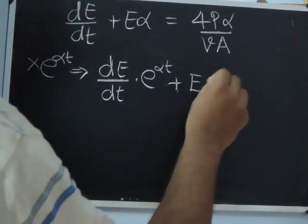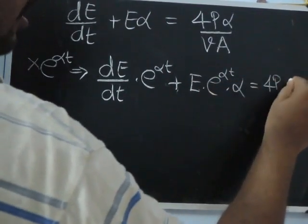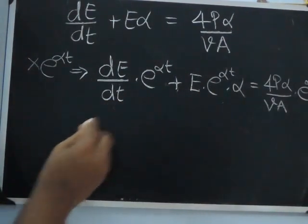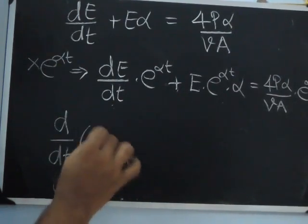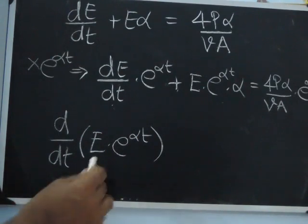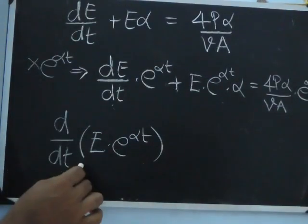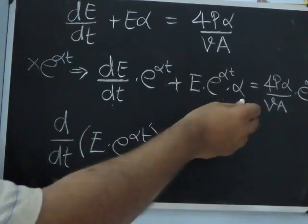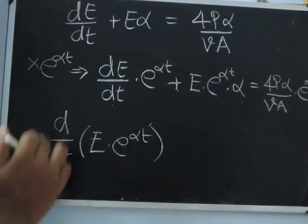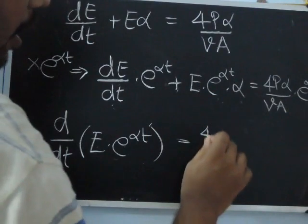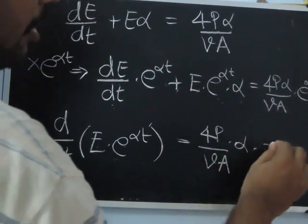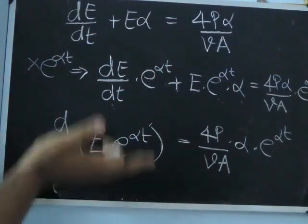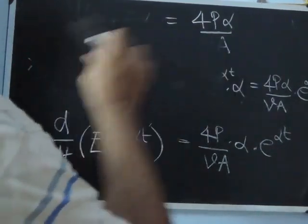So multiplying through by e^(αt), I have DE by DT times e^(αt) plus E times e^(αt) times alpha equal to 4P·alpha by VA times e^(αt). If you look at these two terms on the left, this is nothing but the differentiation of E times e^(αt) by the product rule — V DU plus U DV — which gives DE by DT times e^(αt) plus E times alpha times e^(αt). So the left side is D by DT of E times e^(αt), equal to 4P by VA into alpha into e^(αt). We did this because now it is easy to integrate.